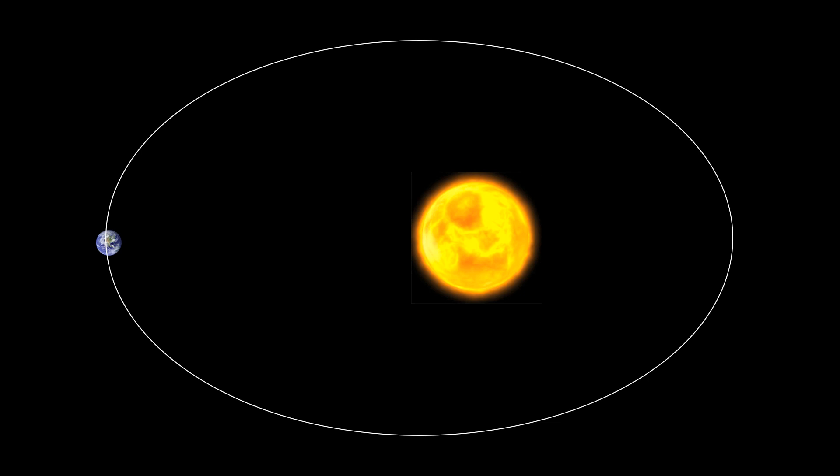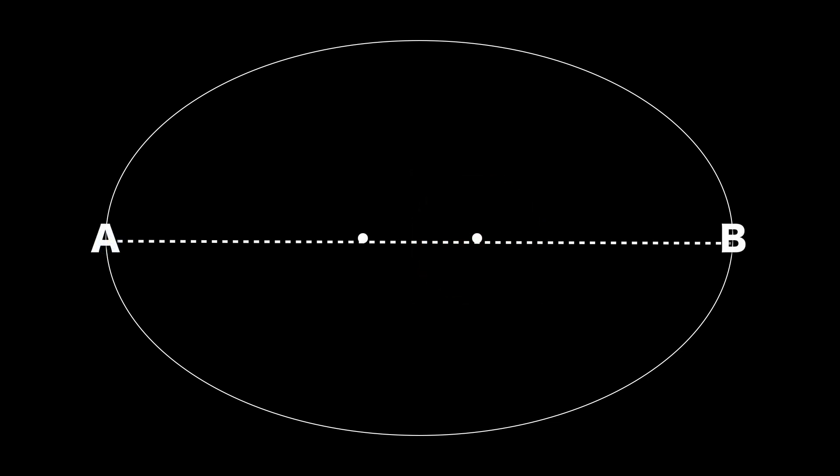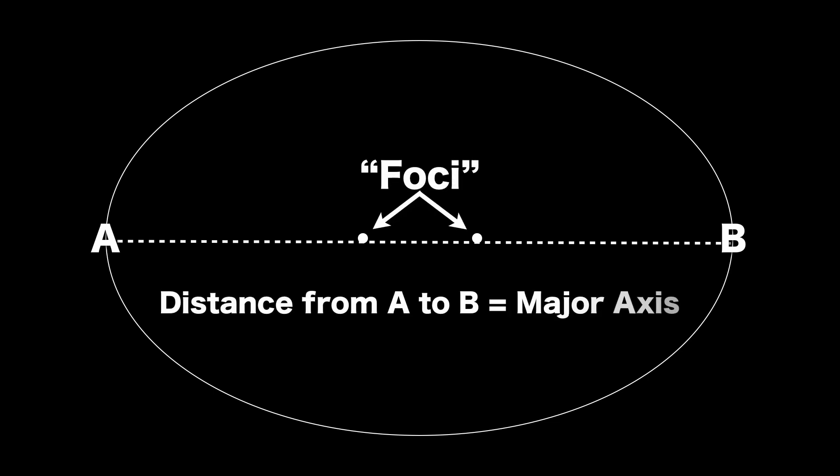So let's get into a quick example here. So you have an orbit of our Earth moving around the Sun. What you're going to do is you're going to make a line, AB, straight through the center of the ellipse. Basically through the fattest part of your ellipse. Your focal points are going to be the two dots somewhat in the middle of the ellipse. So those are your foci. And your major axis is going to be line A and B.